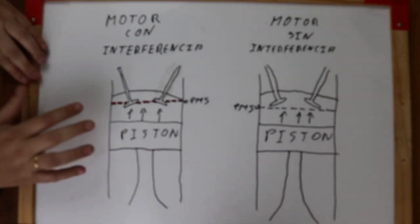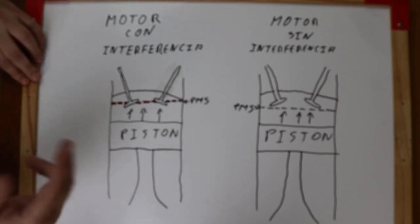Because the engine with interference, which is really known as an interference engine, is an engine in which the piston at the top dead center occupies the space of the open valves.